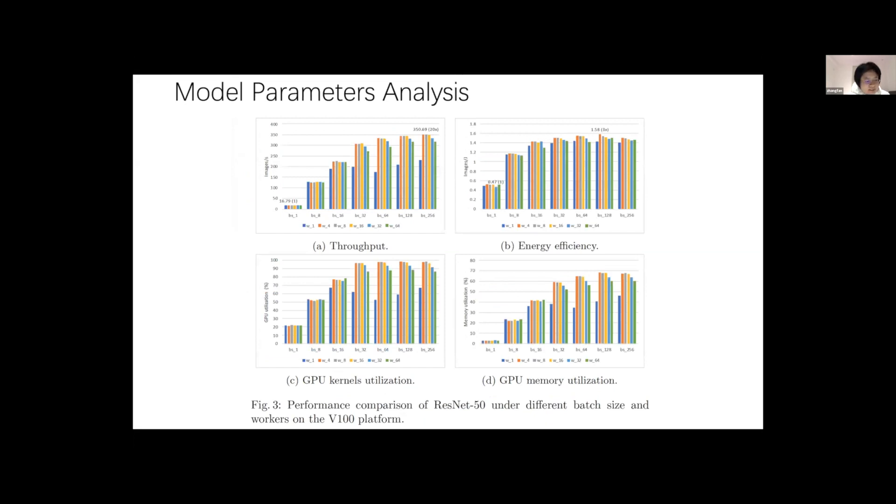So we know that AI training workload always has huge configuration space. But we only select two important parameters, batch size and the number of workers, and to explore an extensive range also. So batch size here we select is from 1 to 256. 256 is the max number of data sets that already fills up a GPU, and the larger value will cause out-of-memory error. And the number of workers is from 1 to 64. There is a performance increase, increased first, and then decrease.